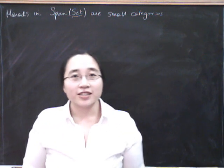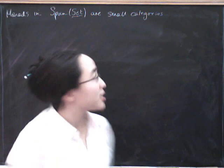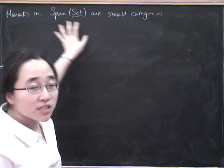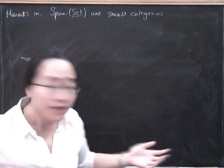We're now going to show that monads in spans are small categories. That is, if we take the bicategory of spans in sets, we can look at monads in there, and what we get out are precisely categories.